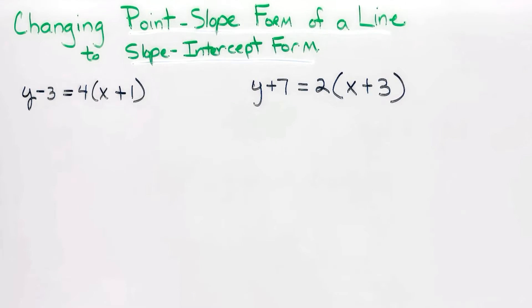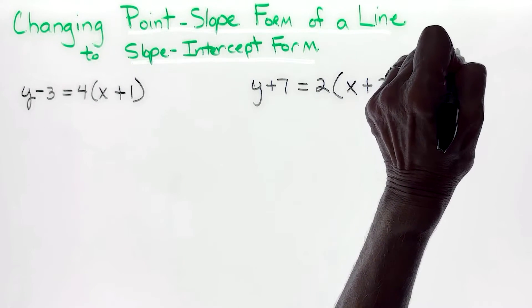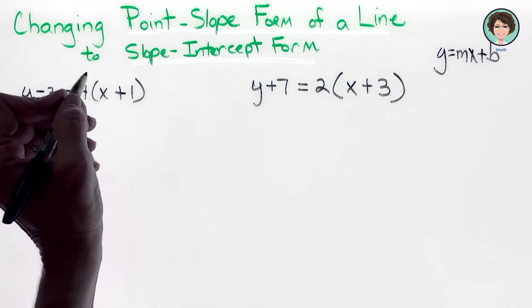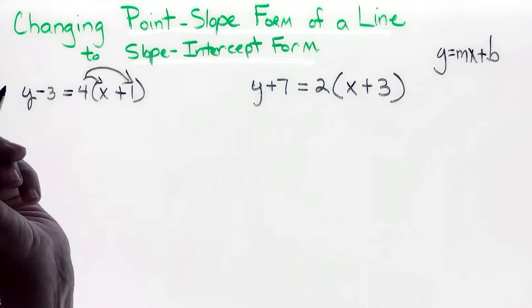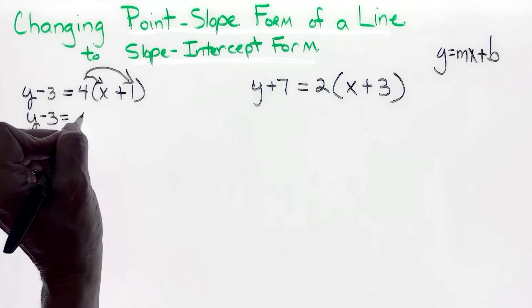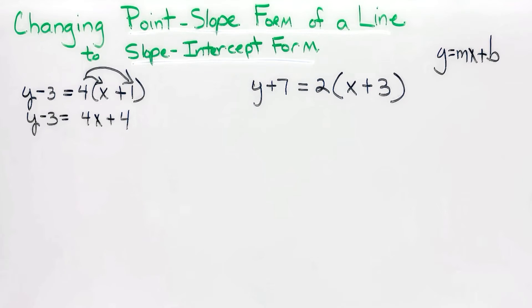This lesson is changing point-slope form of a line to slope-intercept form, making it look like y equals mx plus b. The first thing we do using order of operations is multiply using the distributive property. So y minus 3 equals 4x plus 4.